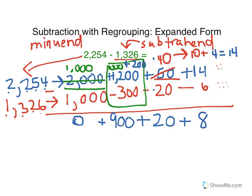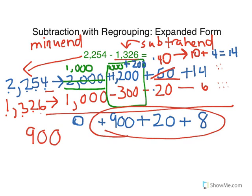Now that we've subtracted, I'm going to take these numbers and add them together, being careful to line them up properly in their place value. 900 plus 20 plus 8 will give me 928. So I think this is my answer.